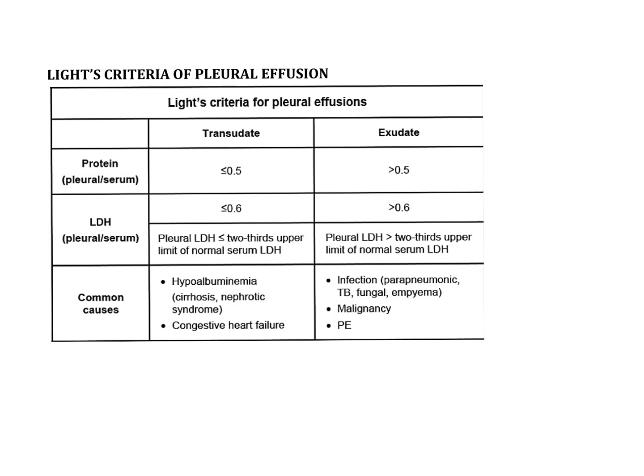Light's criteria states that the pleural protein to serum ratio should be less than 0.5 for transudate, and greater than 0.5 for exudate, meaning there is an increased amount of protein in exudate. Next, regarding LDH: LDH is increased in metabolic activities.